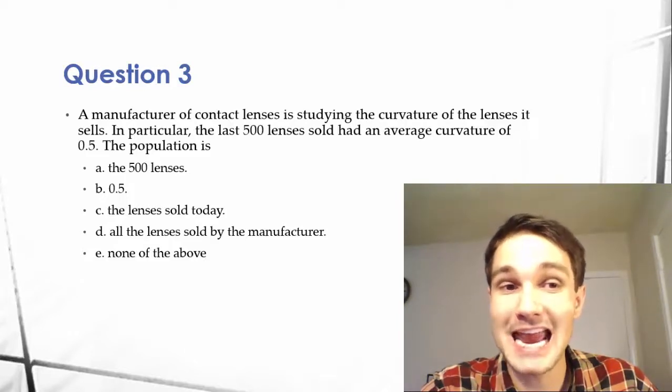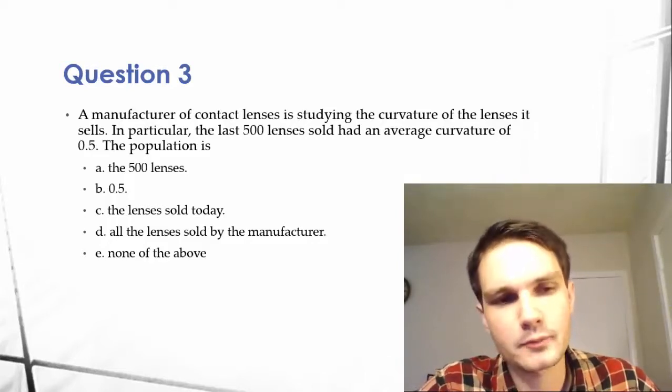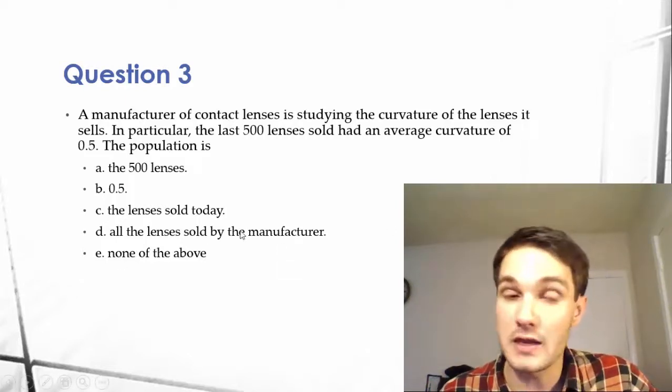The population is A, the 500 lenses, B, .5, C, the lenses sold today, or D, all the lenses sold by the manufacturer. And then, of course, there's the option for none of the above.